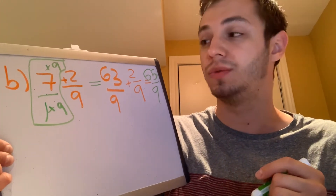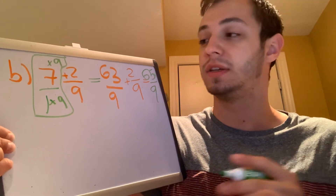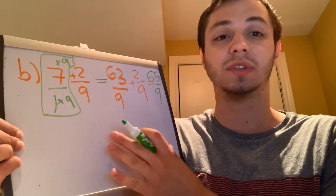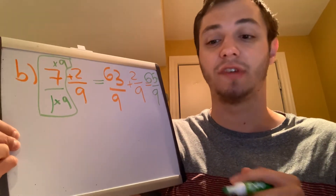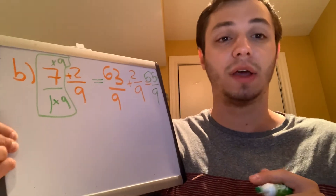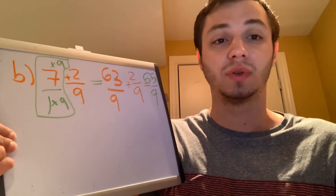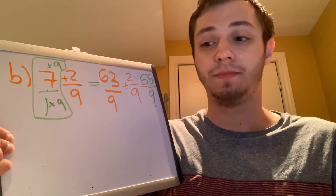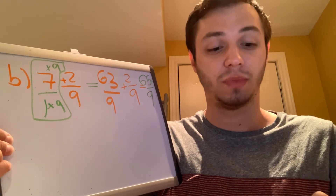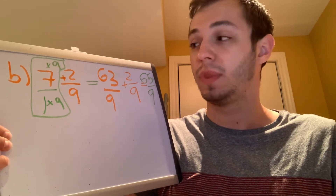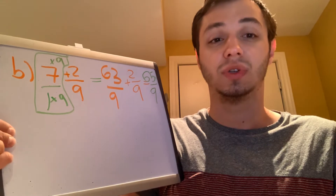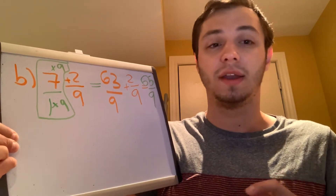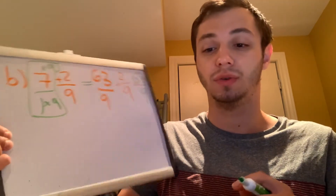For parts C and D, follow the same steps we did. You're going to change the whole number into a fraction, then multiply the bottom number so that both bottom numbers are the same. Remember that what you do to your bottom number you do to your top number, and then find your answer. You can pause the video now and then we'll look at part 2, which will be ratio word problems.